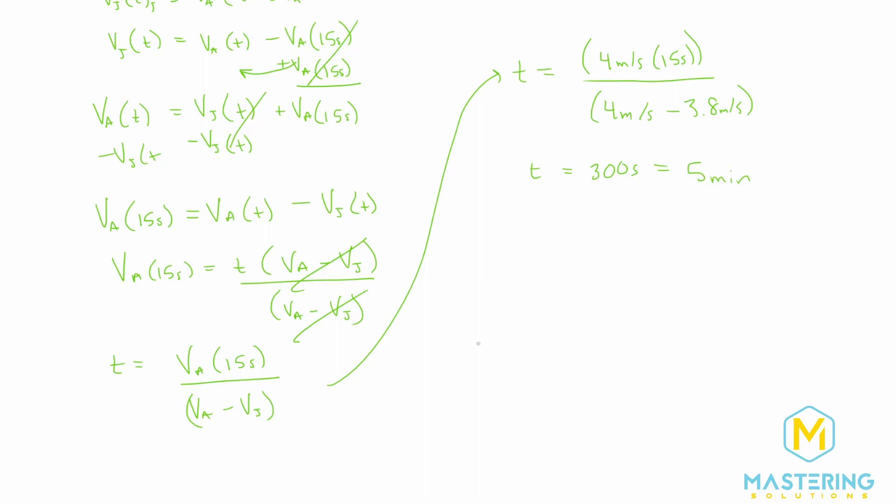So depending on how Mastering Physics wants the answer, it's either 300 seconds or five minutes is the final answer for how long it will take for Alyssa to catch up to Jenny.